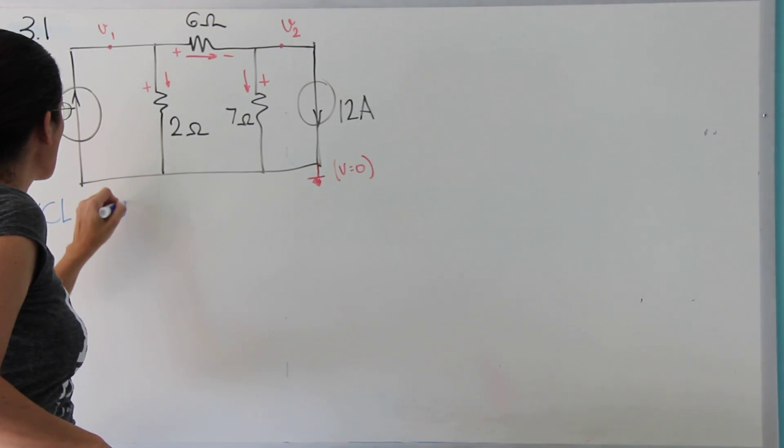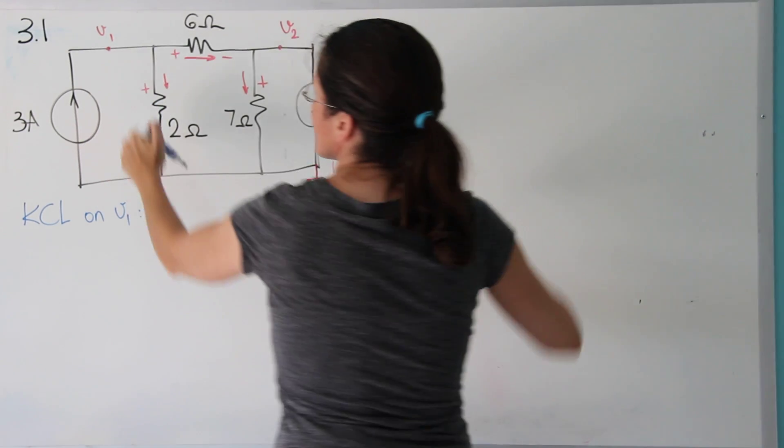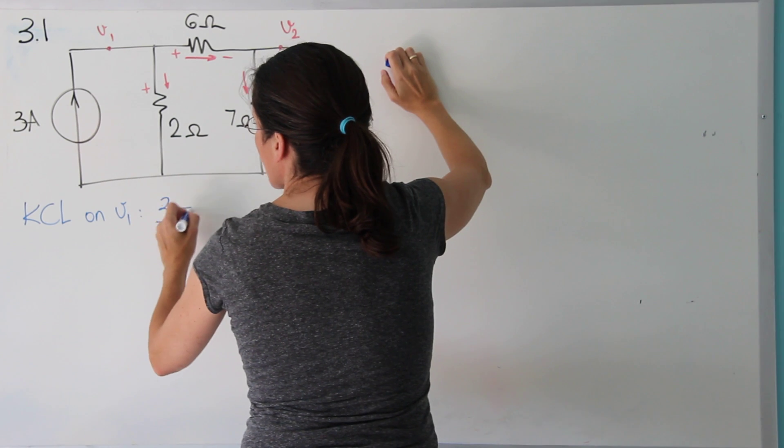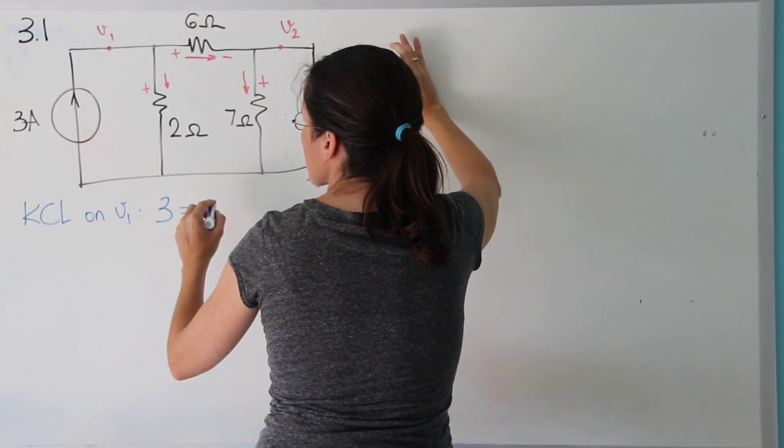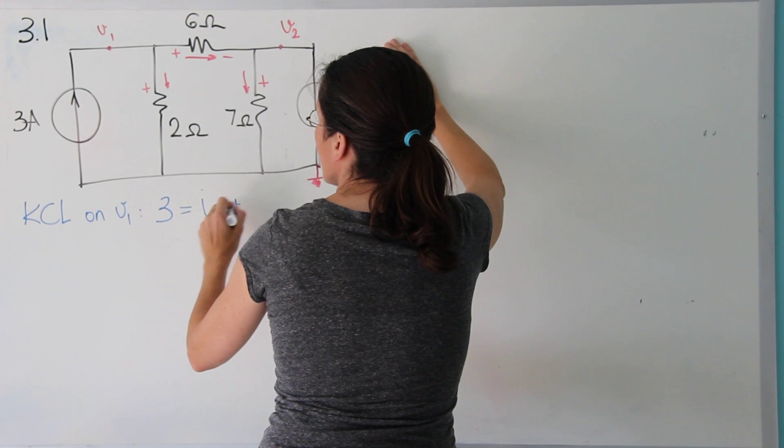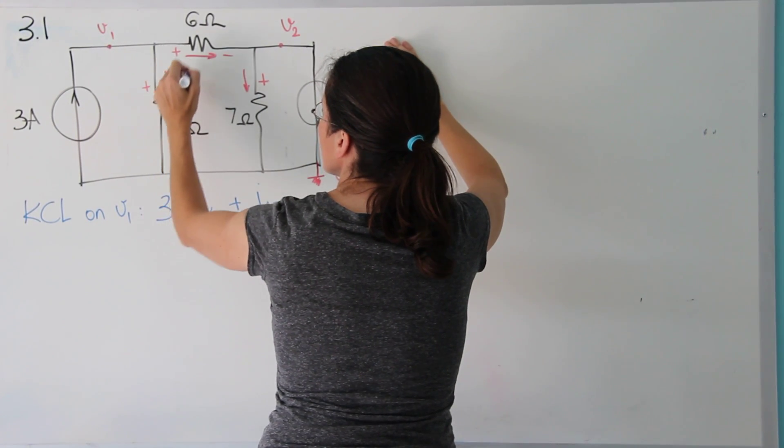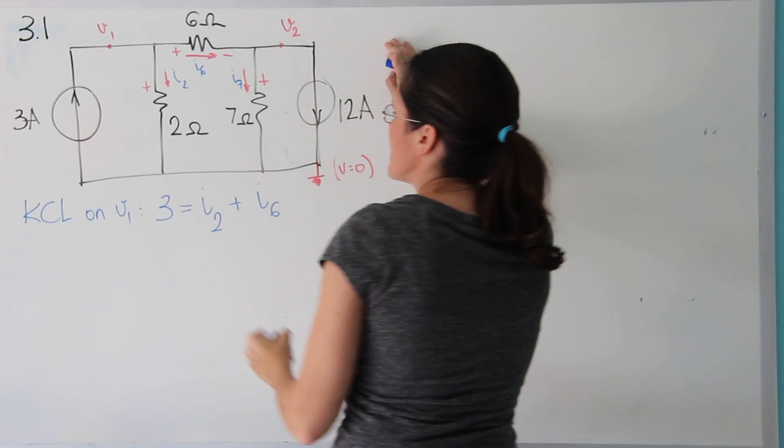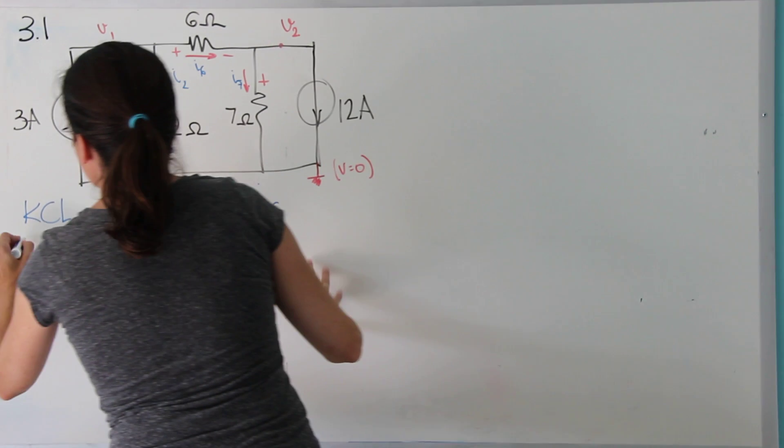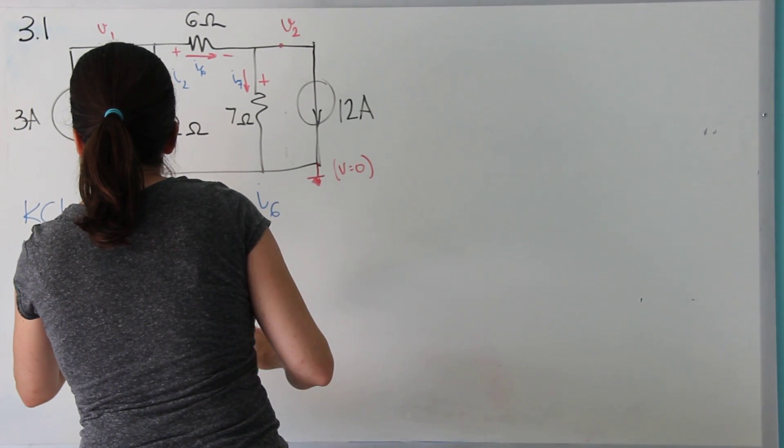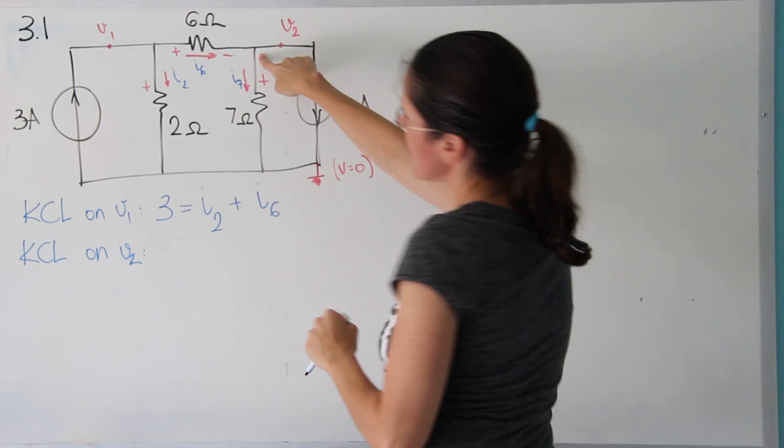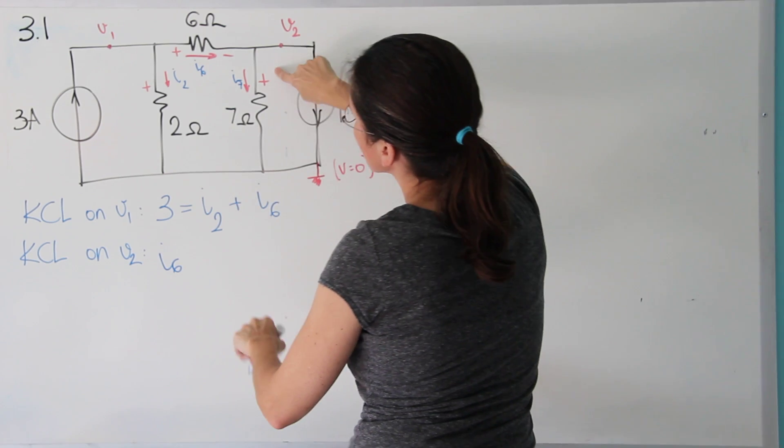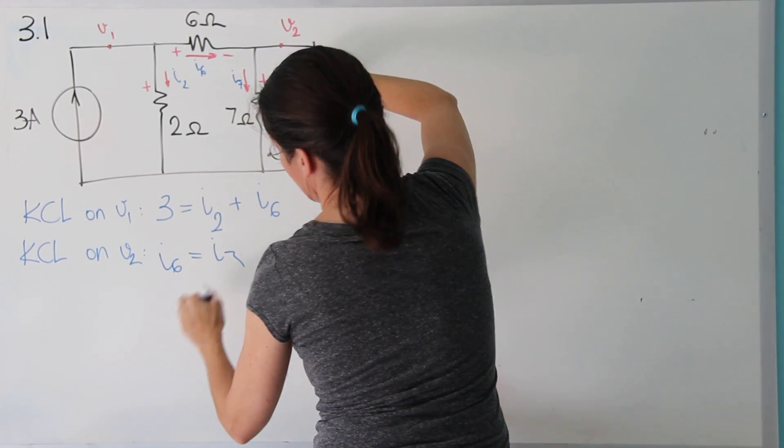So KCL on V1. All currents coming into the node, or the 3 amps, equals to the currents getting out of the node, I2 and I6. So I'm calling this guy I2, this guy I6, and this one I7. And then KCL on V2. Here, I6 is coming in to the node I7.